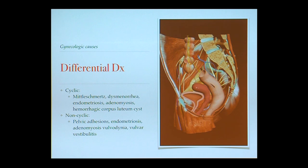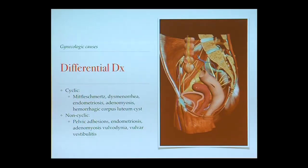Non-cyclic causes include pelvic adhesions, which can sometimes happen after surgery. Endometriosis can progress, with endometrial glands outside of the uterus. Adenomyosis is when the endometrial glands invade into the myometrium, causing heavier cramping and bleeding. Vulvodynia is pain associated with the outside of the vulva, and vulvar vestibulitis is pain located in the most central part near the entry to the vagina.